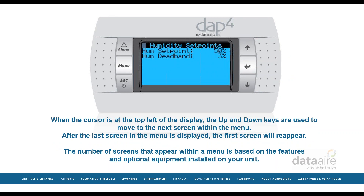When the cursor is at the top left of the display, the up and down keys are used to move to the next screen within the menu. After the last screen in the menu is displayed, the first screen will reappear. The number of screens that appear within a menu is based on the features and optional equipment installed on your unit.